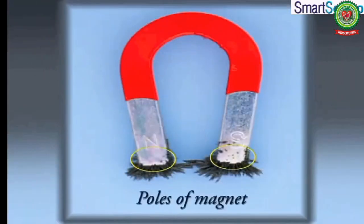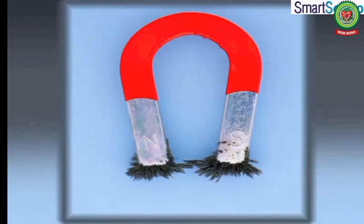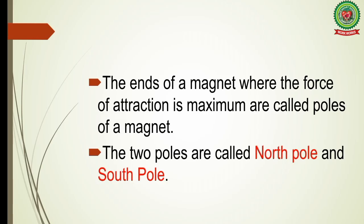We can do this activity using magnets of different shapes. Note down the definition: the ends of a magnet where the force of attraction is maximum are called poles of a magnet. The two poles are called the north pole and the south pole.